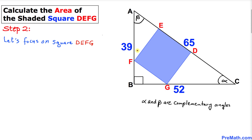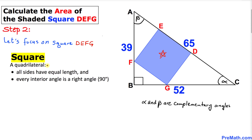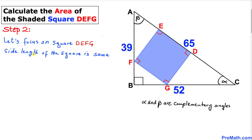Here is our next step. Let's focus on this square DEFG. By definition of a square, all sides have equal lengths and every interior angle is a right angle — that means 90 degrees. So the side length of this square is the same throughout. I'll call this side length X, so all four sides are X, and all interior angles are 90 degrees.